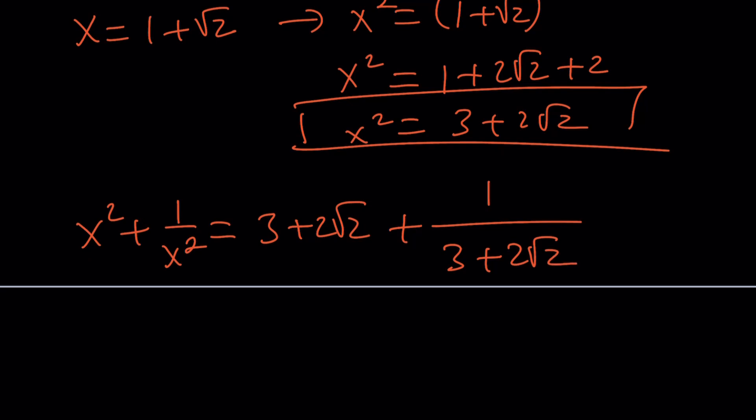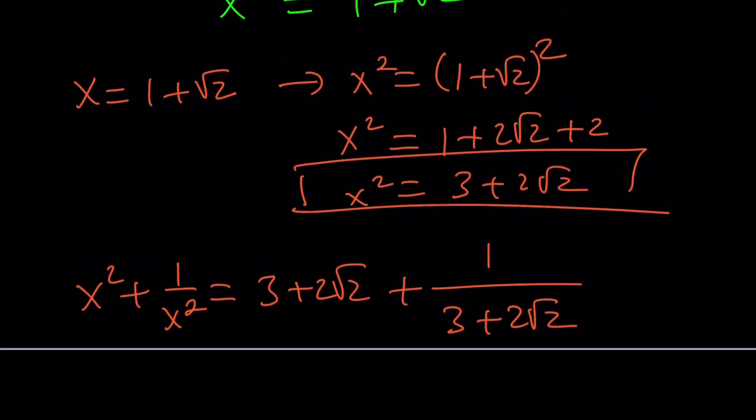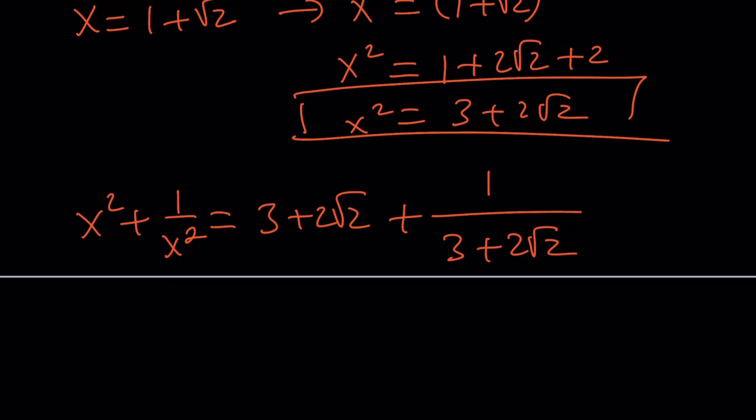3 plus 2 root 2 plus 1 over 3 plus 2 root 2. Now, these are kind of reciprocals, and I do need to rationalize the denominator. Let's multiply by the conjugate of 3 plus 2 root 2, which is 3 minus 2 root 2.